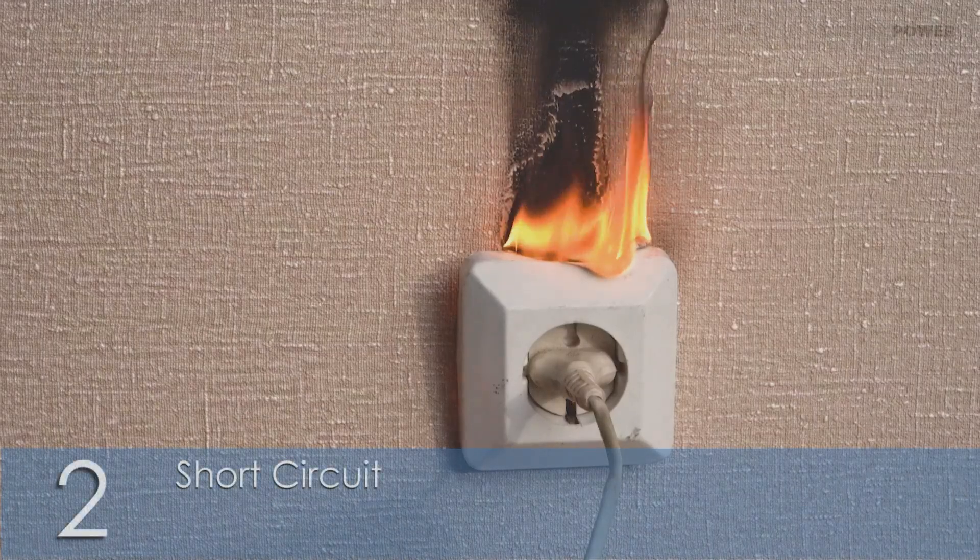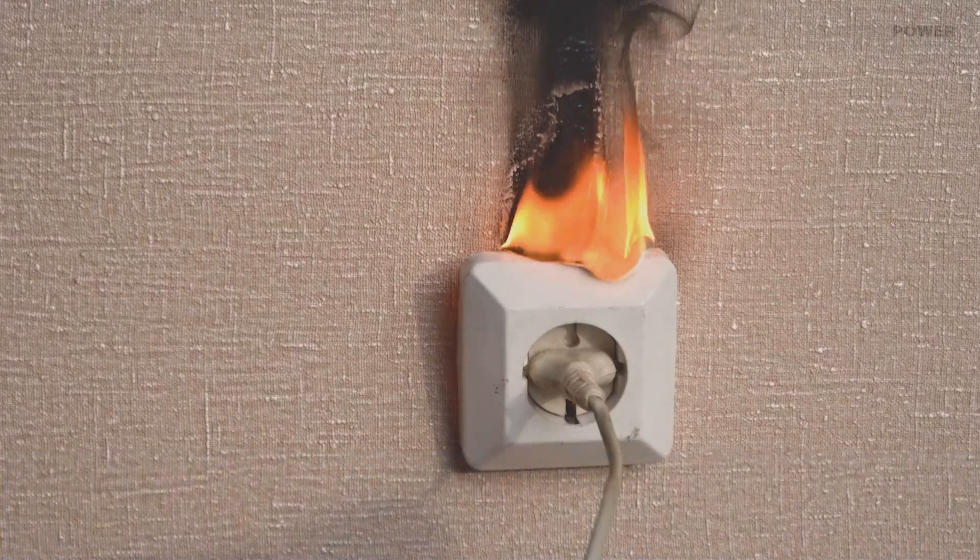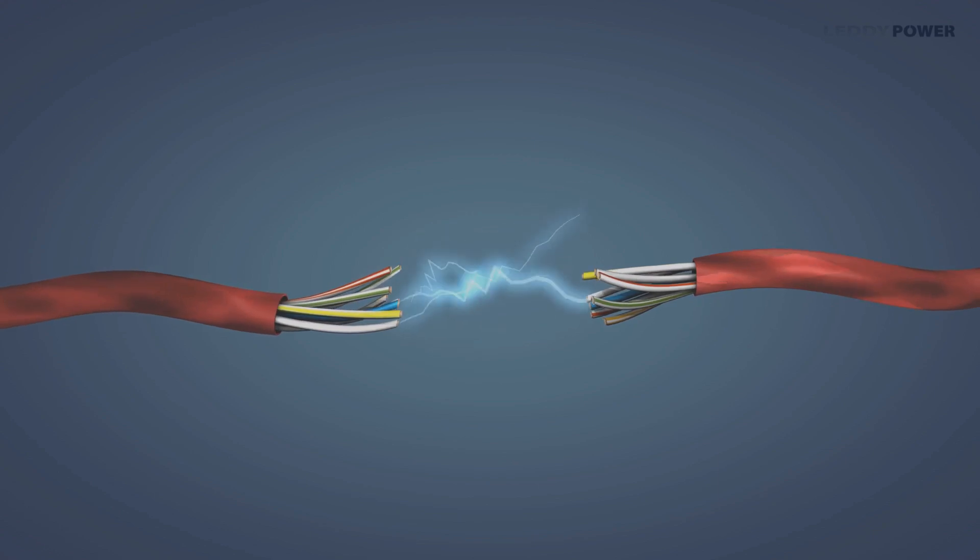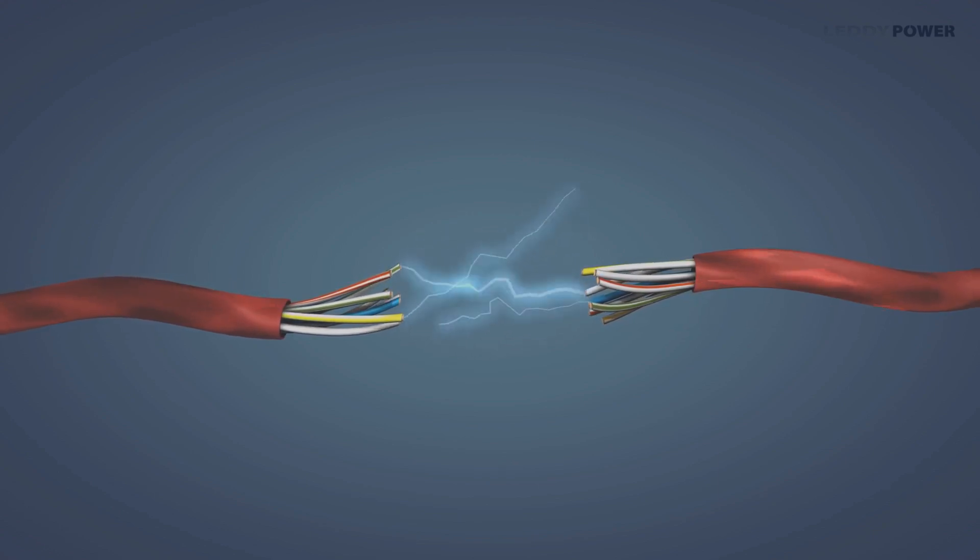Number two, short circuit. The flow of electric current along an unintended path is what results in short circuits. Sudden surge of electric current due to this reason can overload the circuit, tripping the breaker.